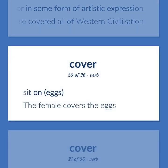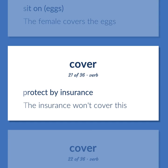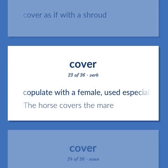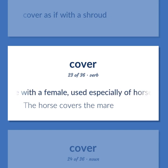Sit on eggs — the female covers the eggs. Protect by insurance — the insurance won't cover this. Cover as if with a shroud. Copulate with a female, used especially of horses — the horse covers the mare.